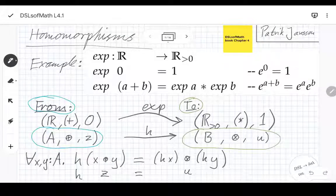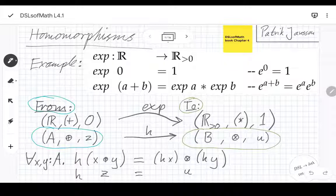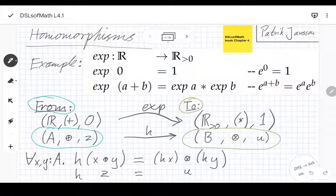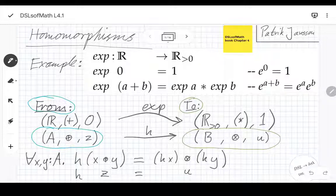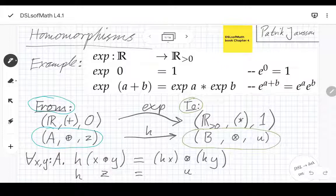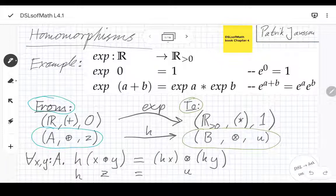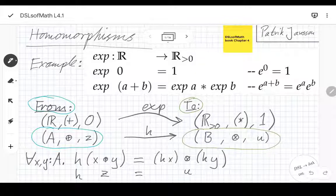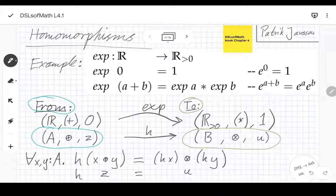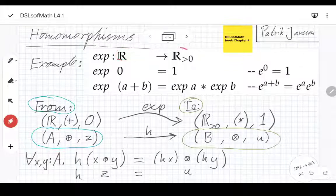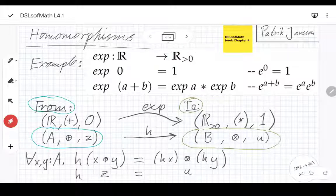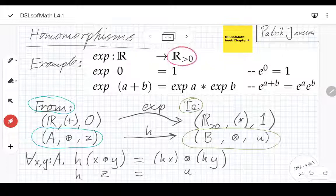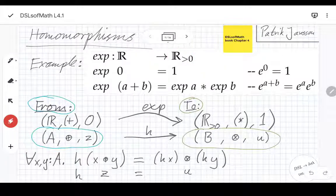Okay, time to start lecture 4.1. This is the fourth week of the Domain Specific Languages of Mathematics course and we will start talking about homomorphisms. We'll start by looking at the example of the exponential function. The exponential function e to the power of x is a common example and very useful in mathematics and other disciplines. We've talked a lot about exponential growth during the pandemic years, but here from the mathematical point of view we first look at its type. As usual, I like to analyze the type, and the exponential function takes any real number and produces a positive real number, denoted here as R greater than zero.